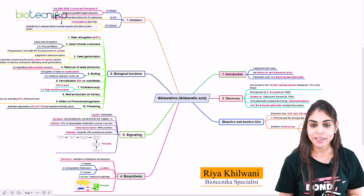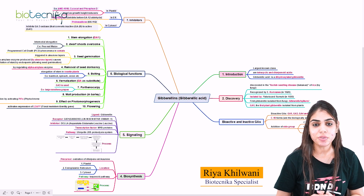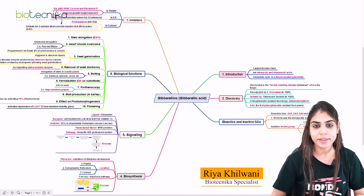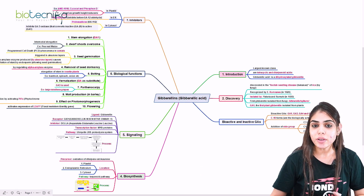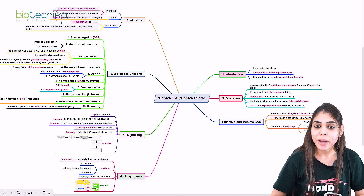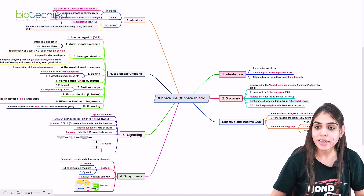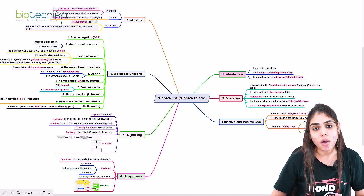Hello everyone, welcome to Biotechnica. This time I will be discussing gibberellic acid phytohormone, also called gibberellin. This is one of the most important phytohormones, and we will focus on certain points like discovery, bioactive and inactive gibberellic acid, biological functions, the signaling pathway involved, biosynthesis, and related inhibitors. Let's understand all these points one by one in detail.